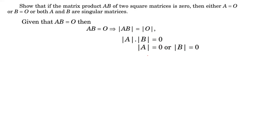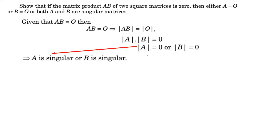These numbers are the determinant of A and the determinant of B. So you can basically say that either A is a singular matrix, since its determinant is 0, or B is a singular matrix, since the determinant of B is 0.